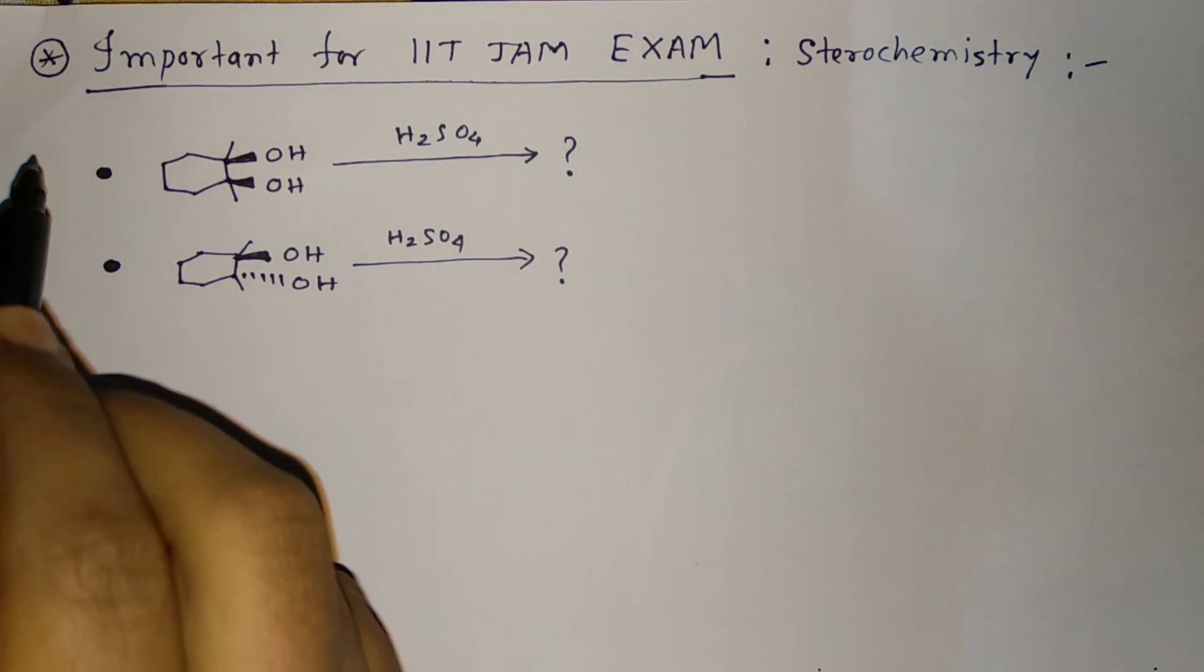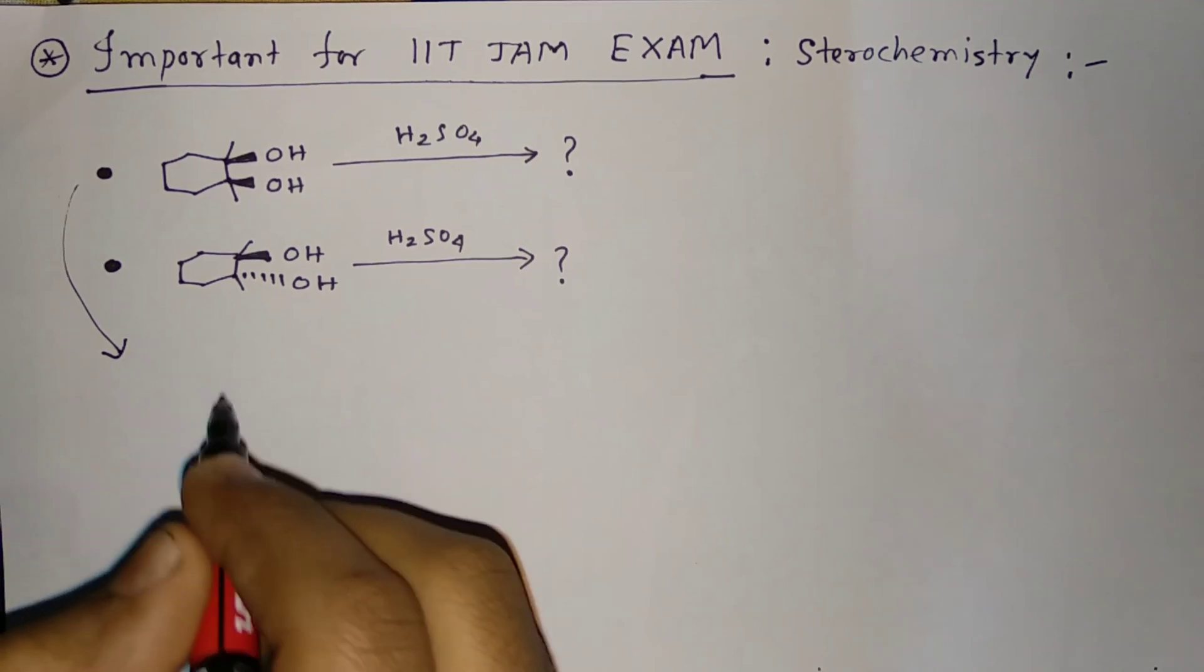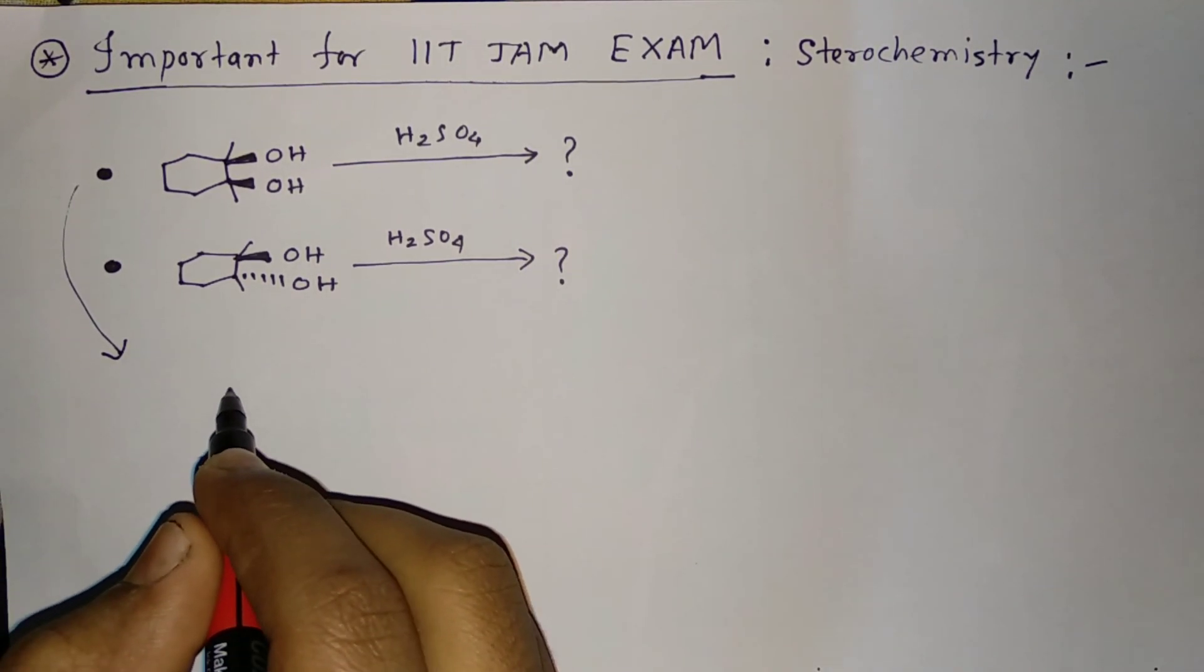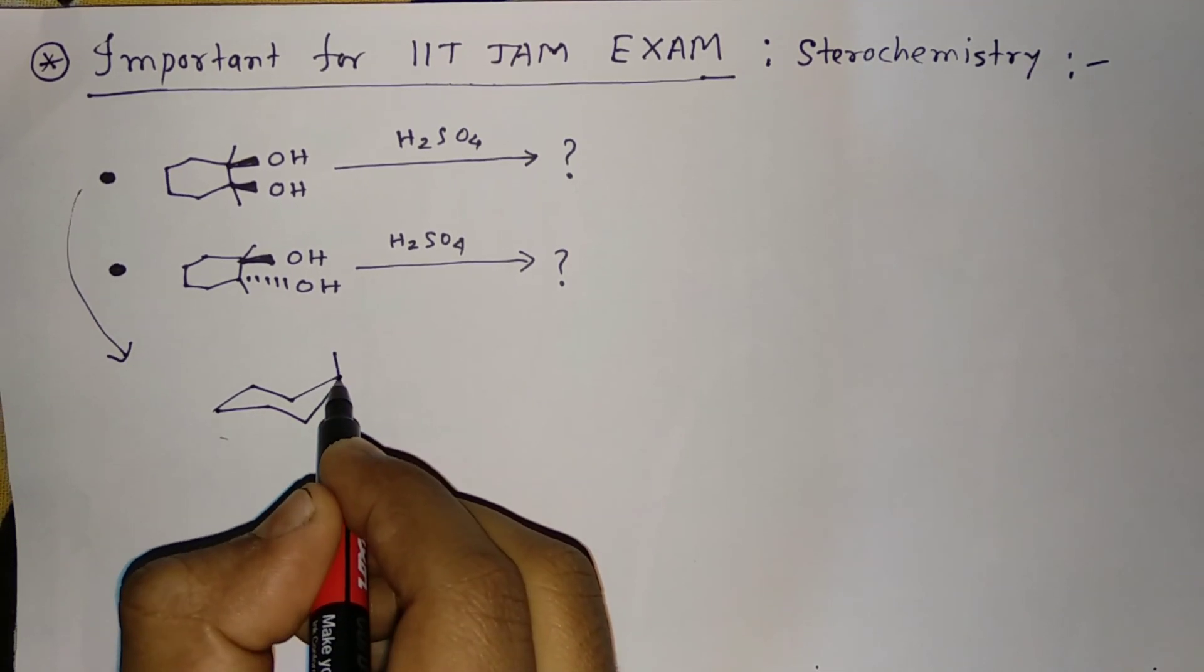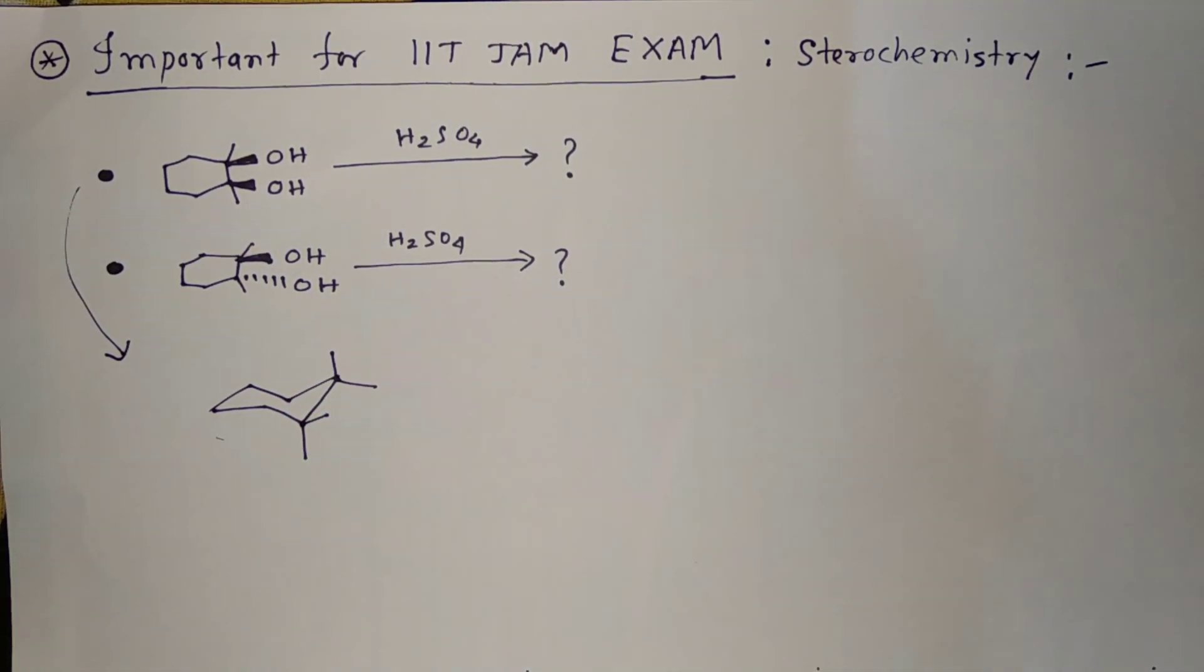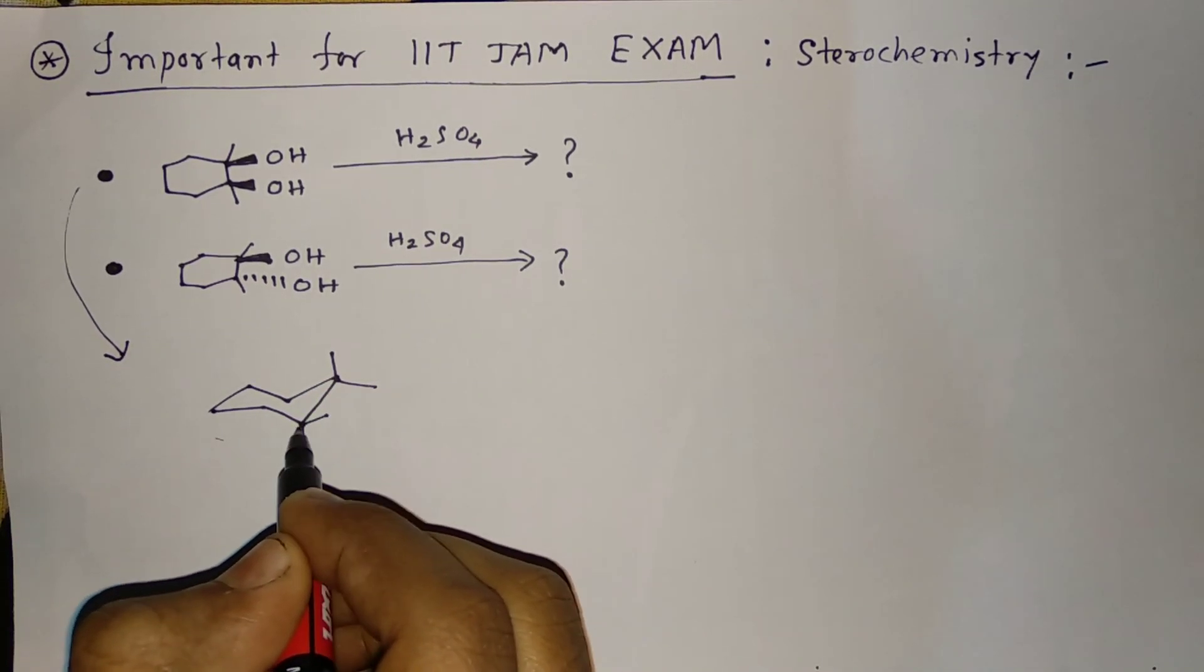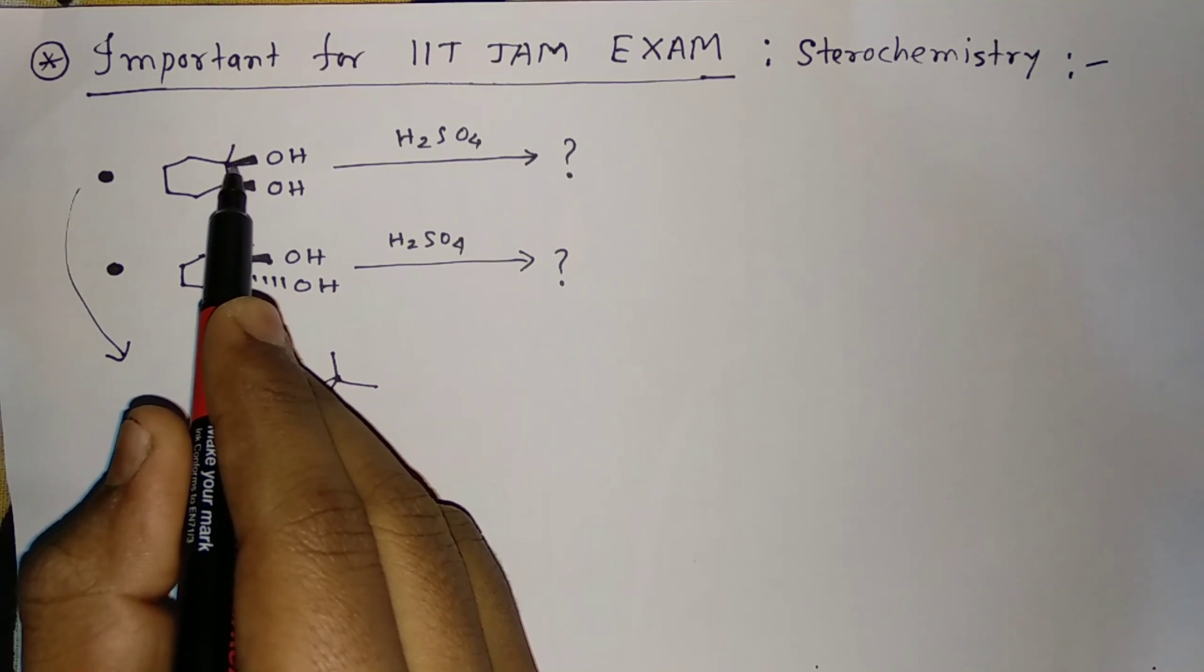Now let's talk about the first question. If we draw this in right cyclic action conformer, it will be like this. This is a 1,2 system, so I am just drawing the 1,2 bond. This is axial-equatorial, equatorial-axial.